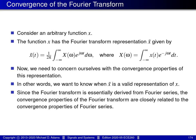When we speak of the convergence of the Fourier transform, what exactly is the issue we're talking about? Suppose that we have an arbitrary function x that we'd like to represent using a Fourier transform representation. We take the function x and substitute it into the Fourier transform analysis equation, which gives us the Fourier transform denoted as X. Then we take X and substitute it into the Fourier transform synthesis equation. If all is well, the result of this integration, the function we're denoting as x̃, should be equal to the function x.